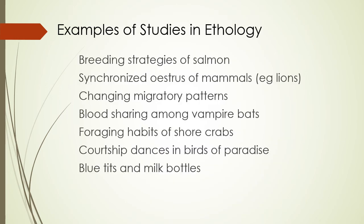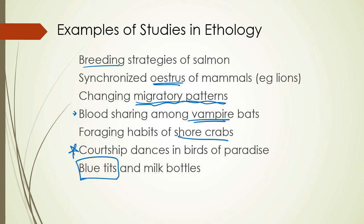There are lots more examples we'll study in ethology and discuss in class: the breeding strategies of salmon swimming upstream; synchronized estrus, where lions in a pride actually go into heat at the same time; migratory patterns and how they sometimes change over time; vampire bats sharing blood they collected while feeding; the foraging habits of shore crabs; the dances of birds of paradise; and these birds that have learned how to open milk bottles and drink milk from humans' milk supplies.